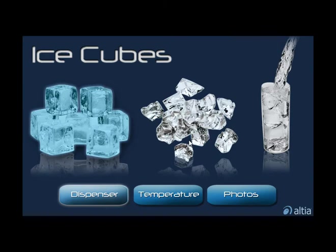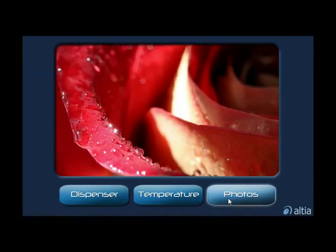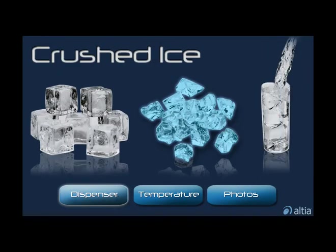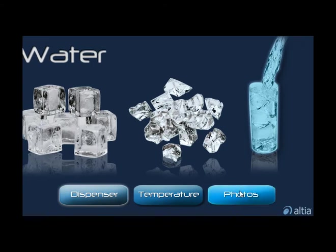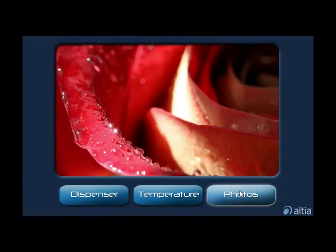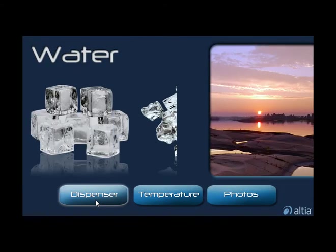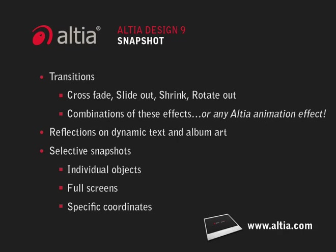When you're ready to deploy, you can generate code for the snapshot object and get your cool HMI onto embedded hardware, and drive customers to choose your product over the competition. The snapshot object allows you to quickly add interesting, animated, dynamic effects to your user interface without having to specially architect your HMI. For more information about the snapshot object and Altia Design 9.0, contact Altia.